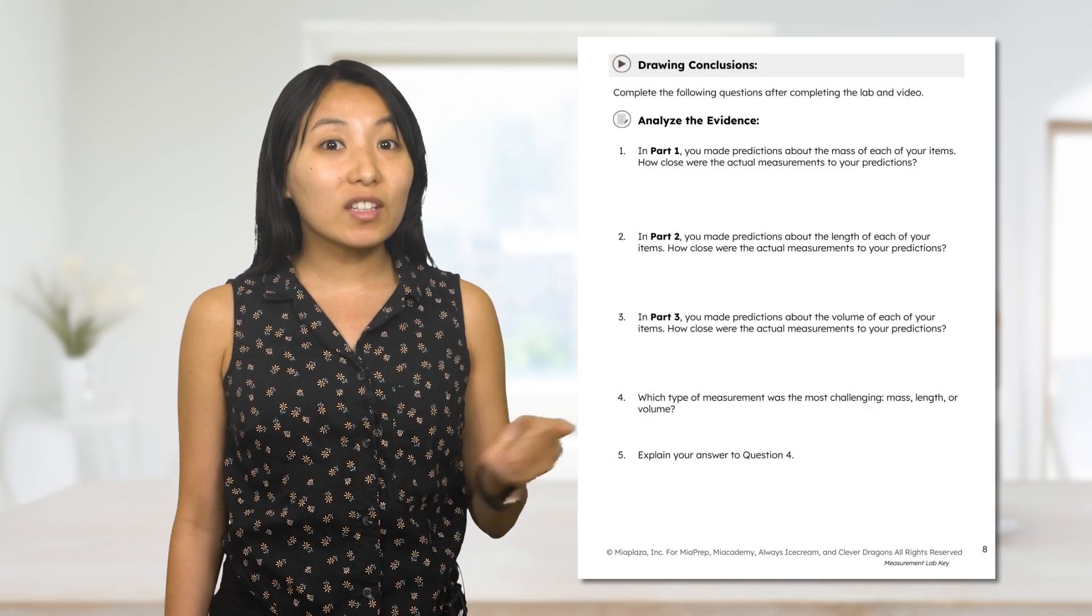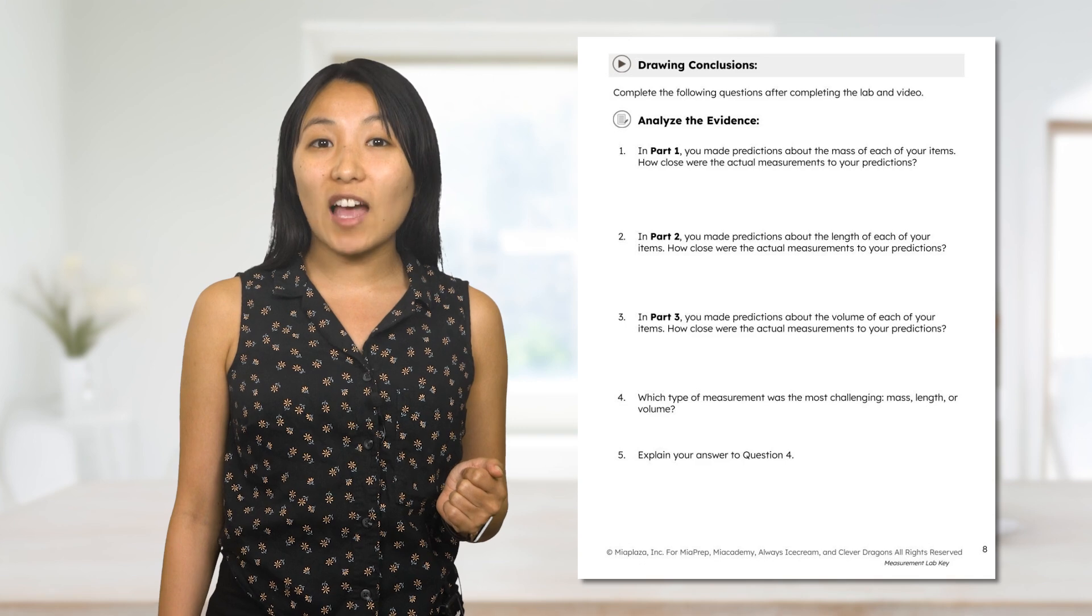Throughout the lab, you made predictions about the mass, length, and volume of each item you measured. Take some time to reflect on these hypotheses. Were they correct? If not, how close were your predictions? Be sure to answer all of the conclusion questions in your interactive lab notes. As we went through the lesson today, you got a chance to sharpen your experimental science skills by taking accurate measurements in the metric system. You'll use these measurement skills in many of the labs throughout this course, so feel free to practice measuring some extra items on your own.